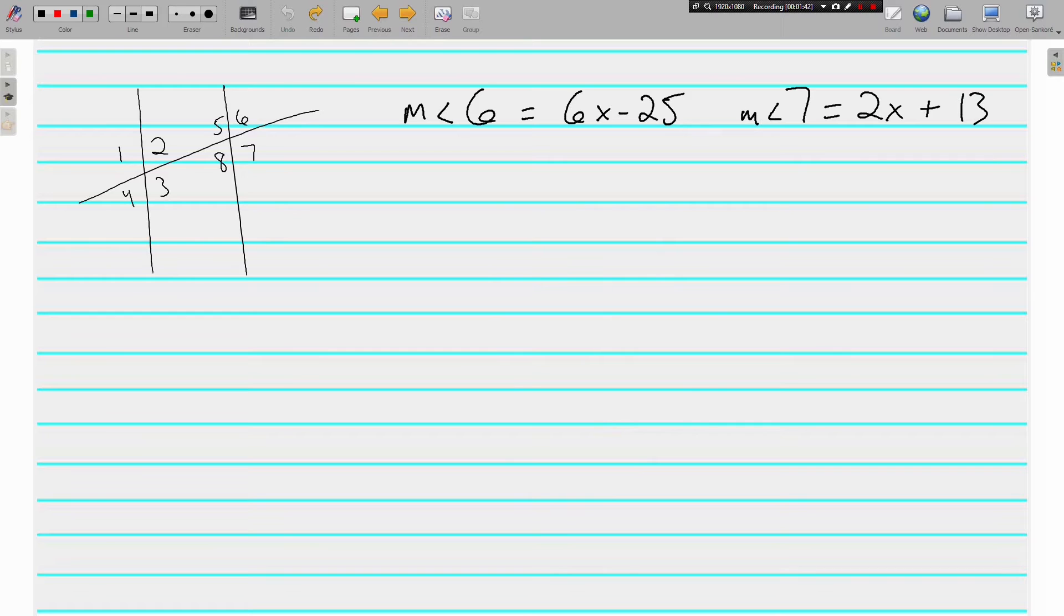Angle 6 and angle 7. These are right next to each other. They're adjacent, and they're along the same straight line, which means that these are supplementary. Supplementary angles have a sum of 180 degrees. The measure of angle 6 plus the measure of angle 7 is going to equal 180 degrees. Angle 6 is 6x minus 25, and angle 7 is 2x plus 13.